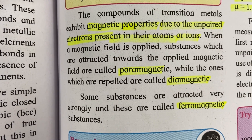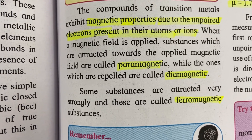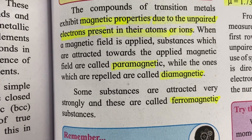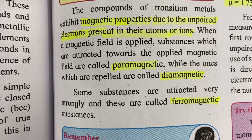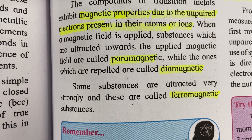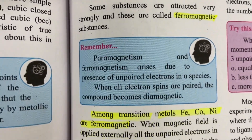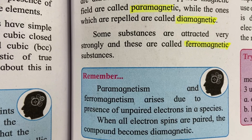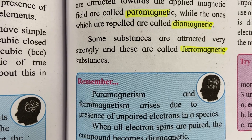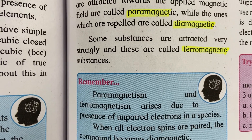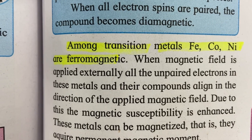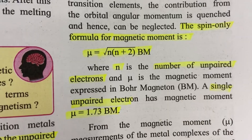Magnetic properties: transition metals exhibit magnetic properties due to the unpaired electrons present in their atoms or ions. Paramagnetic substances have unpaired electrons and are attracted by a magnetic field. Diamagnetic substances have paired electrons and their magnetic lines of force are repelled. Ferromagnetic substances are attracted very strongly — for example, iron, cobalt, and nickel are ferromagnetic.